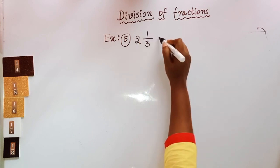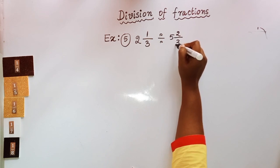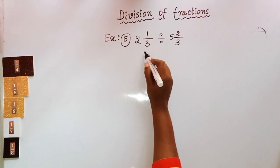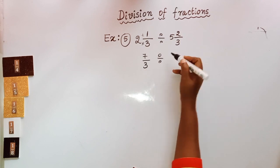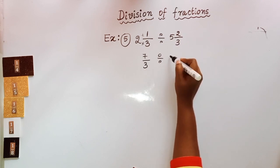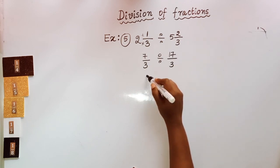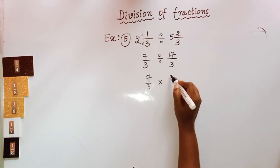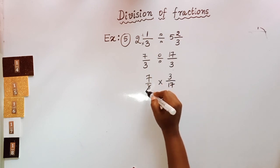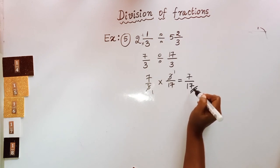Do the 5th example: 2⅓ divided by 5. First convert the mixed fraction into an improper fraction: 3 × 2 = 6, plus 1 = 7, so 7/3. Now 7/3 divided by 5: take the reciprocal of 5, which is 1/5, and multiply — wait, reciprocal of 5 is 1/5. So 7/3 × 1/5. Actually 7/3 × reciprocal of 5: 5 becomes 5/1, reciprocal is 1/5, but using the shown method 7/3 × 3/17 simplifies — the answer is 7/17.